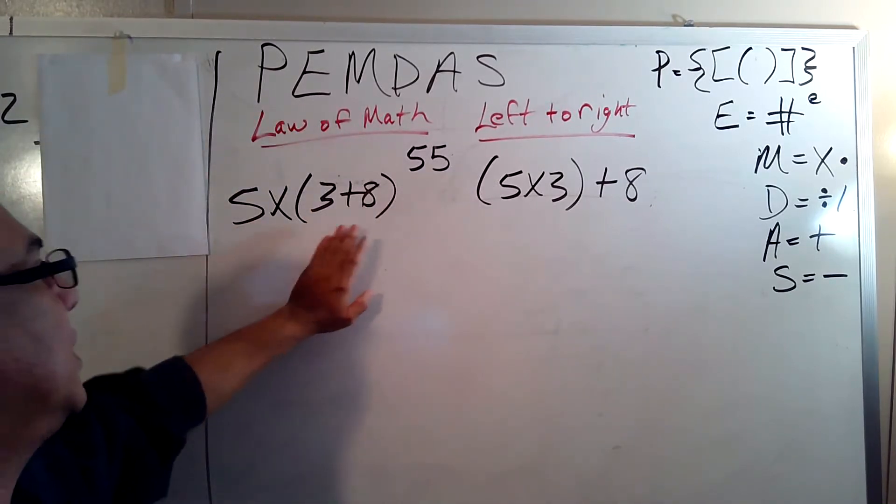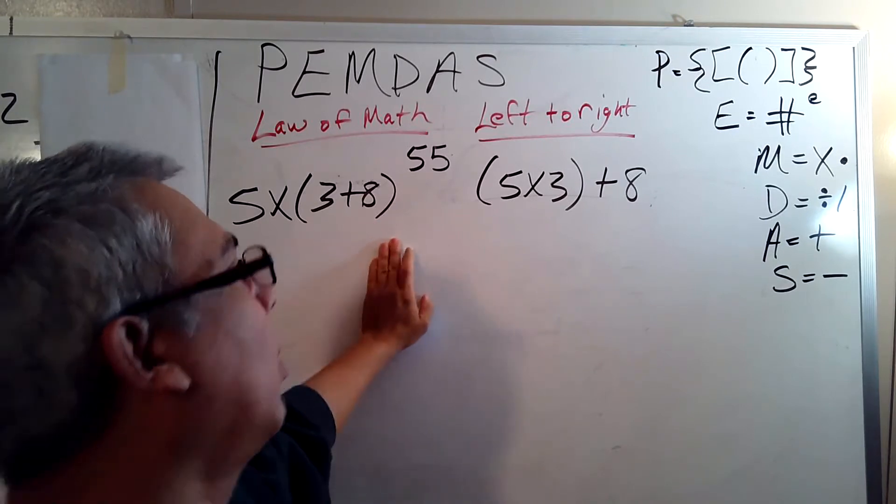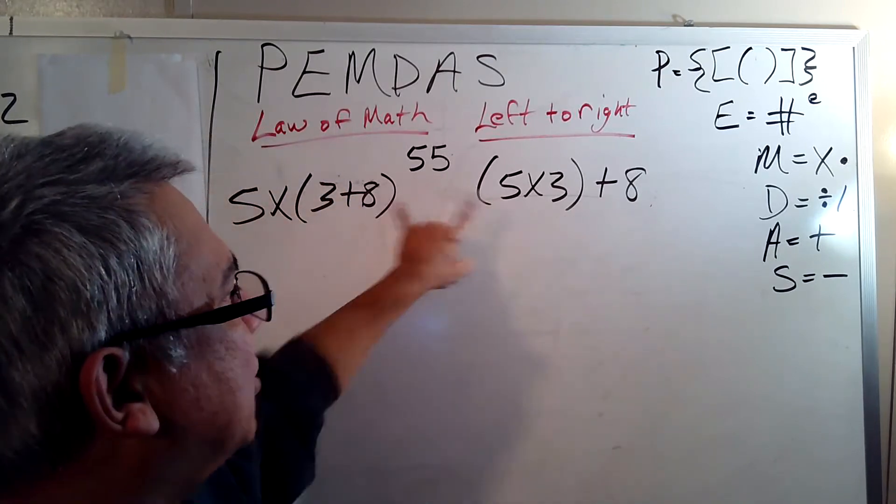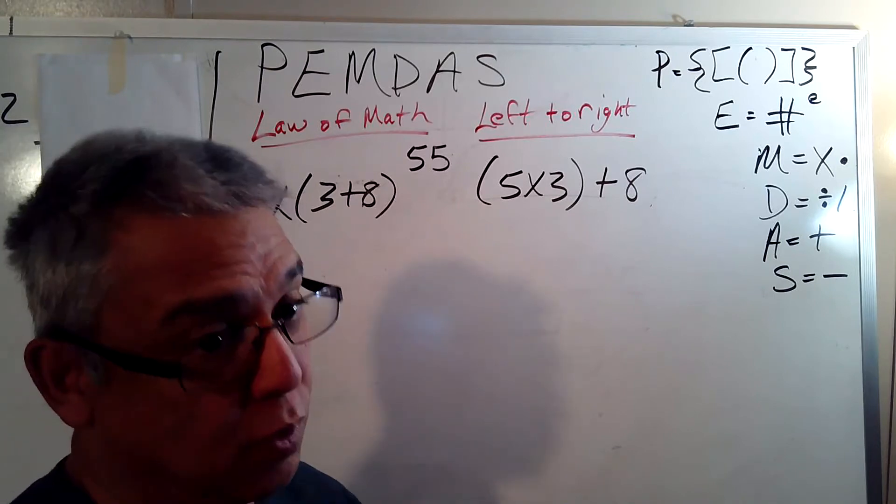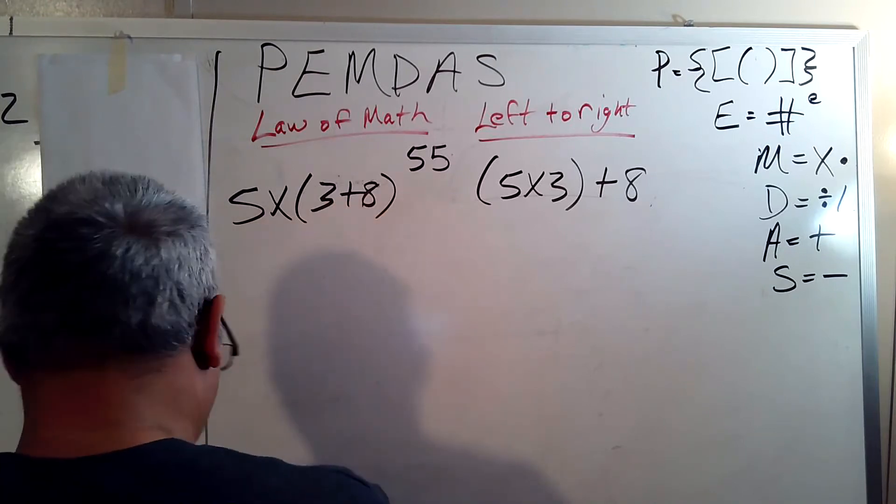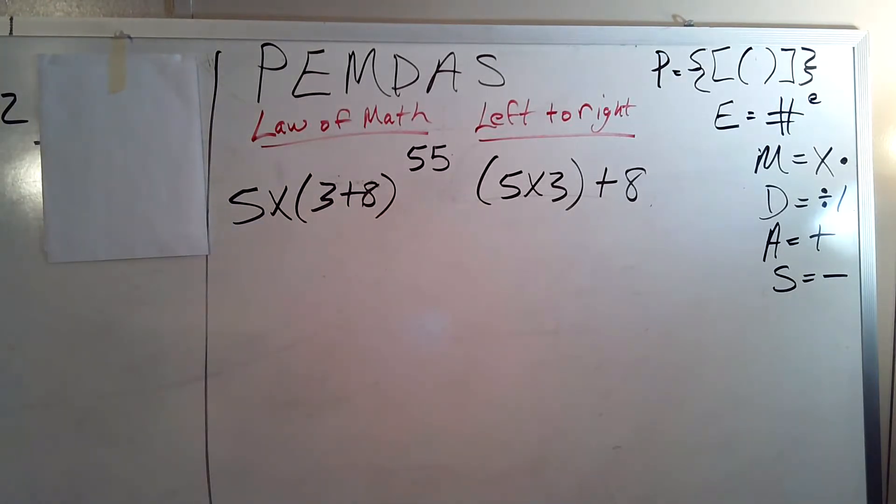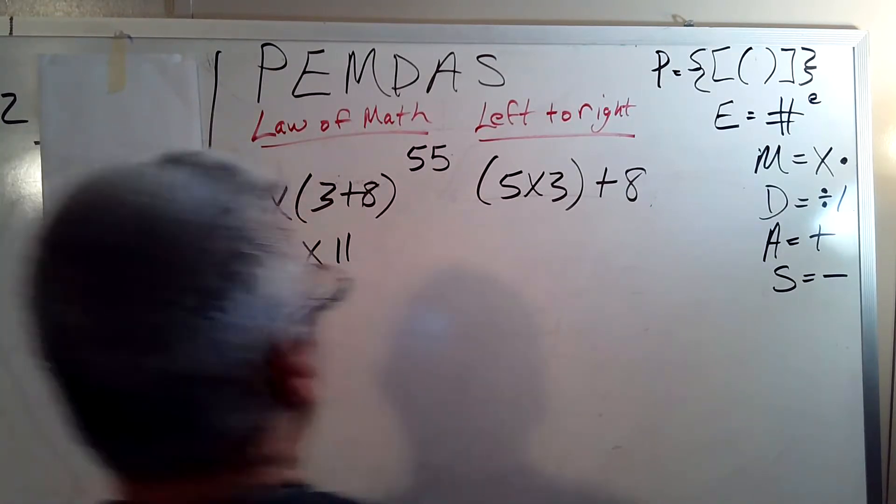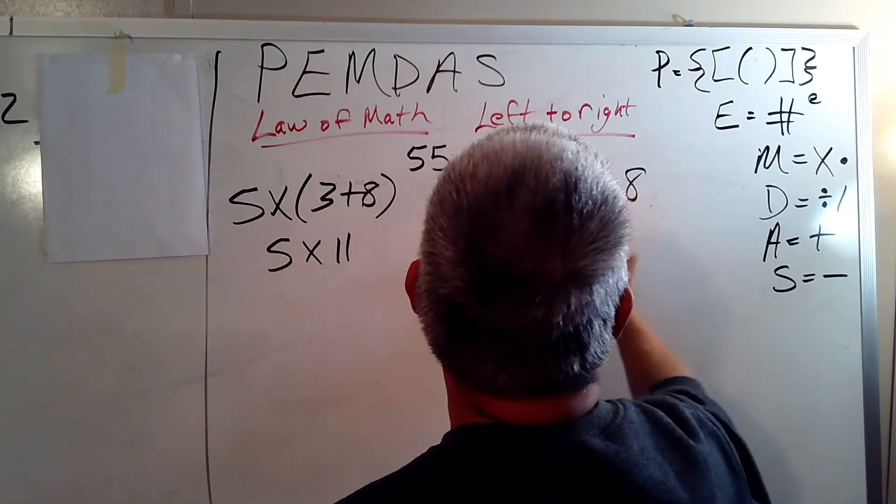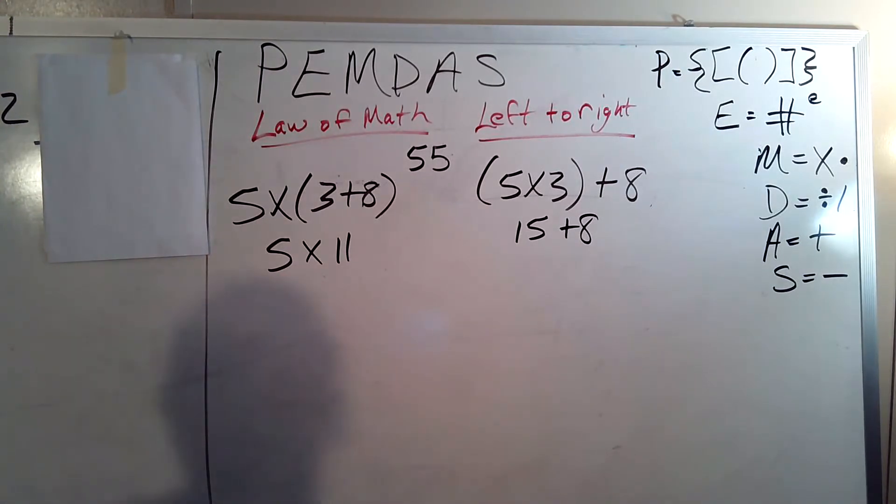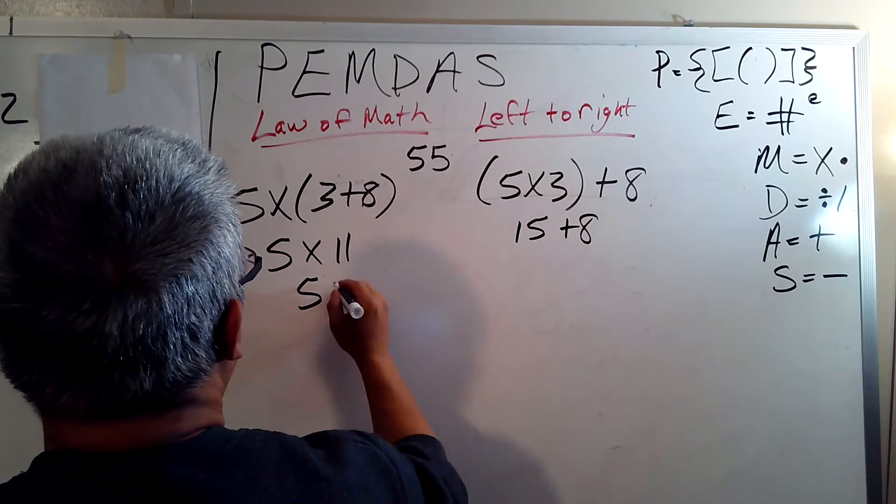It says five times parentheses, three plus eight, close parentheses, or parentheses, five times three, close parentheses, plus eight. Now which one of these two is going to equal 55? I guess we're about to find out. We do the work inside the parentheses first, so three plus eight equals what? Well, should equal three plus eight is eleven. Eleven, and then we go five times. Just bring that down. Five times three is fifteen. Fifteen plus eight, bring that down. Oh, this one says, hey, let's multiply.